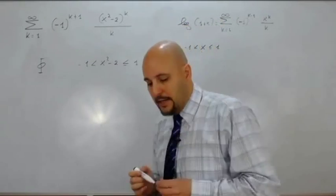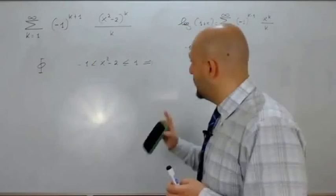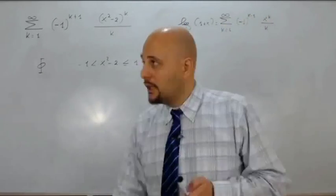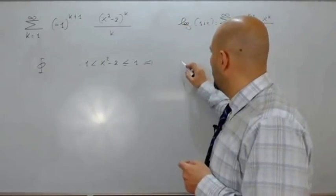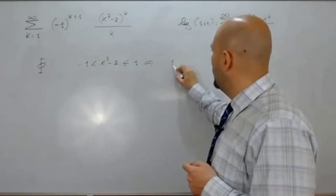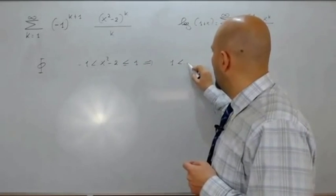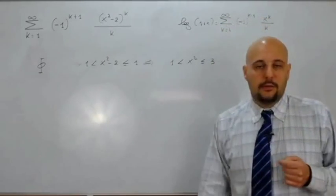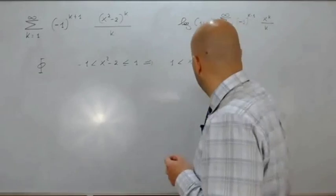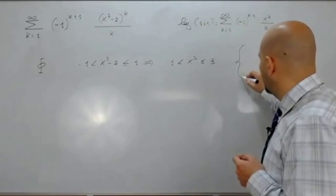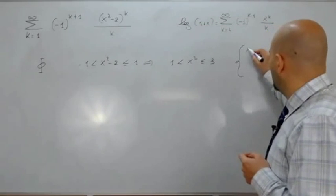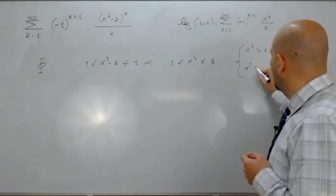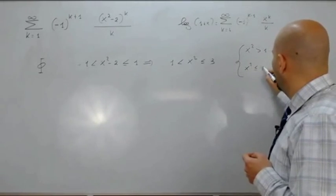Portiamo il meno 2 a sinistra e a destra. Si ottiene il sistema: 1 minore di x al quadrato, minore o uguale di 3. Questo sistema di disequazioni è risolvibile come x quadro maggiore di 1 intersecato con x quadro minore o uguale di 3.